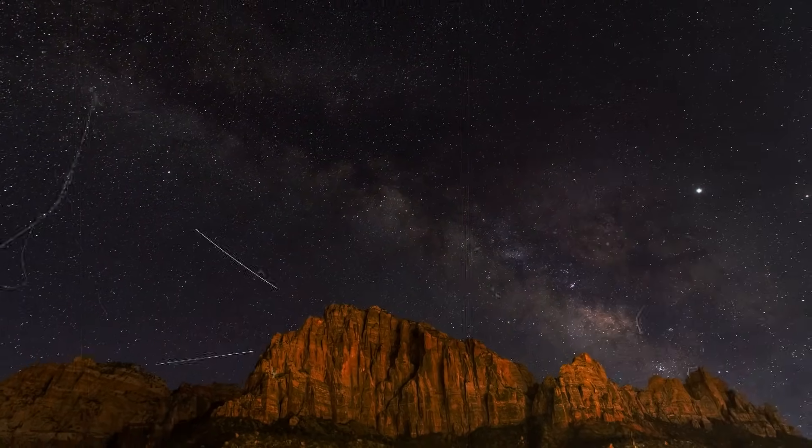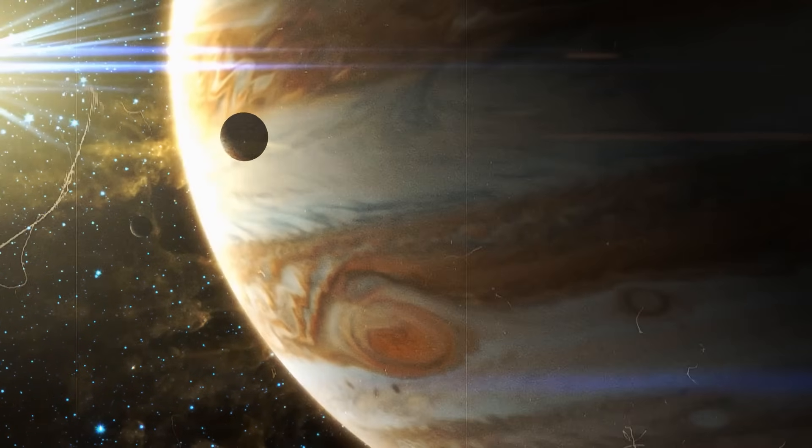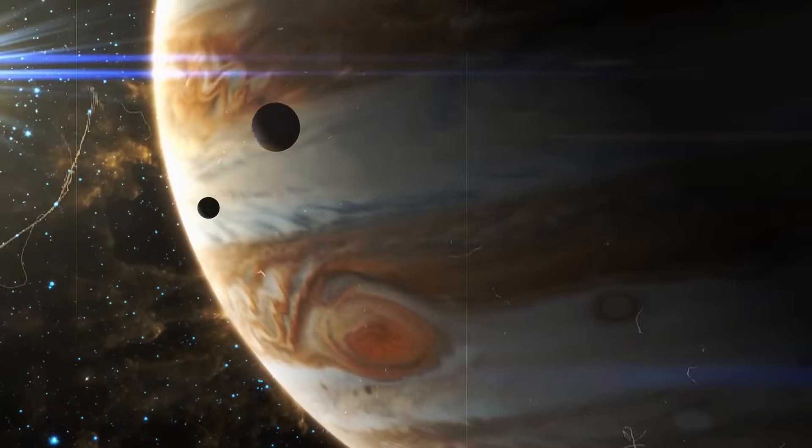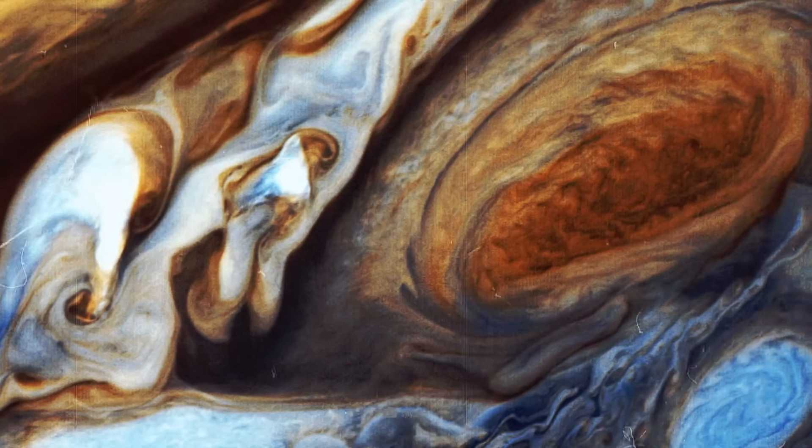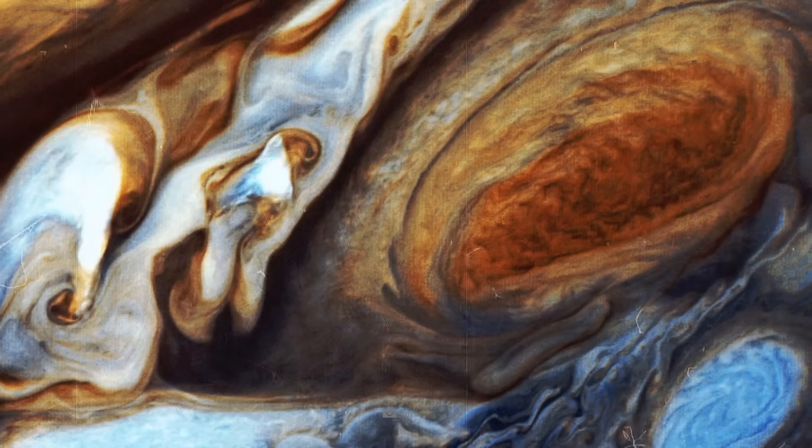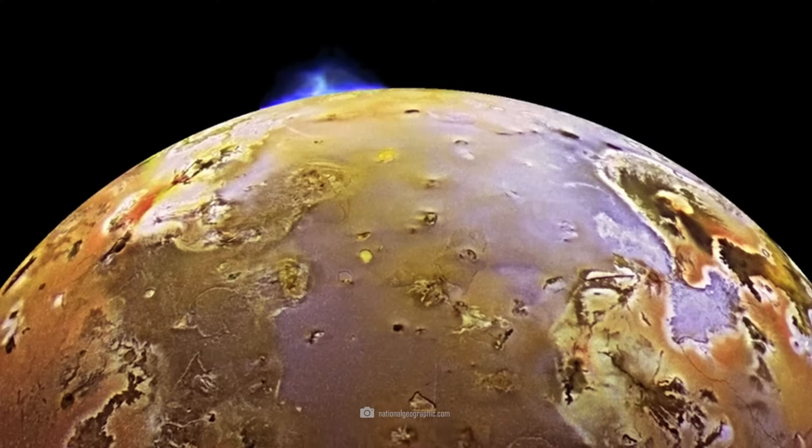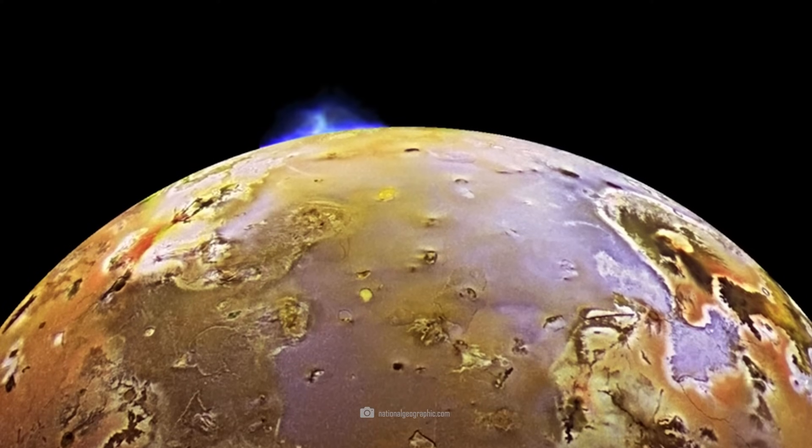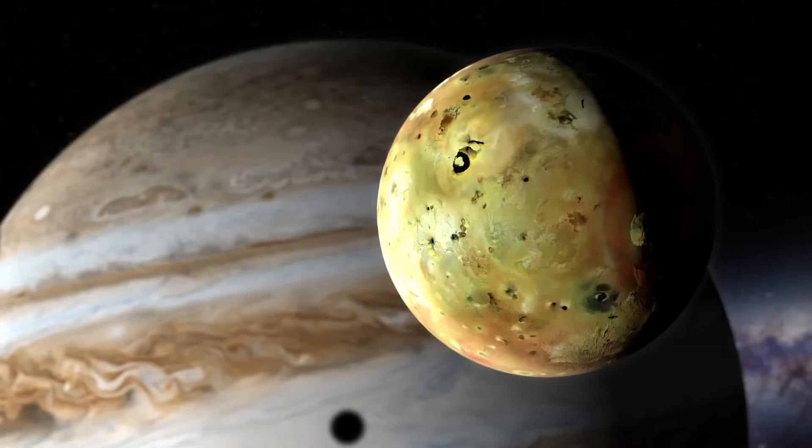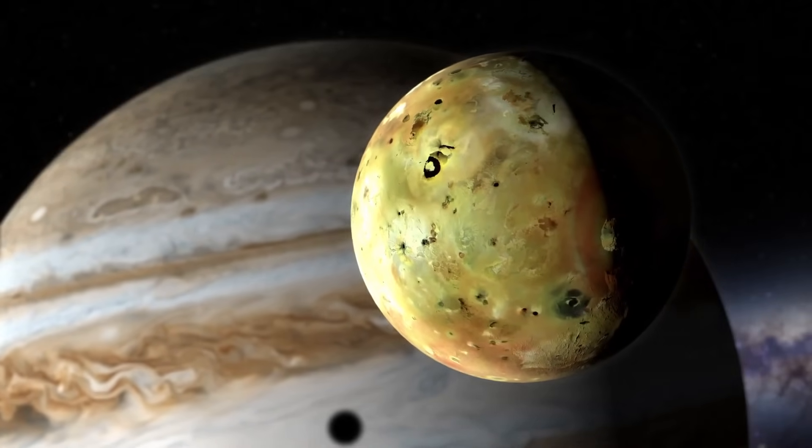During its approach and flyby, it provided breathtaking images and valuable data of Jupiter's turbulent atmospheric currents and powerful storms. It photographed the red spot and the colorful cloud bands. Io, Jupiter's moon, had long been known at the time. As one of the largest moons in the solar system, Io was already visible with fairly simple telescopes in the late Middle Ages.